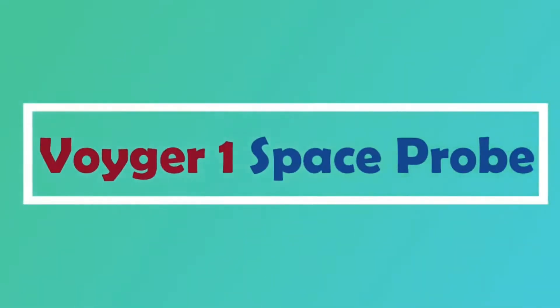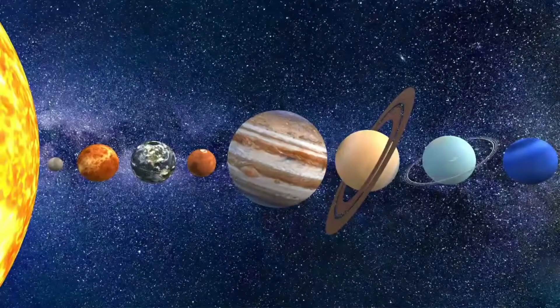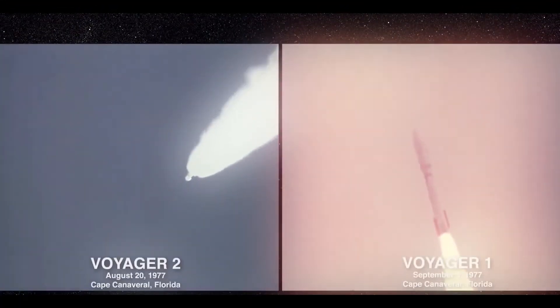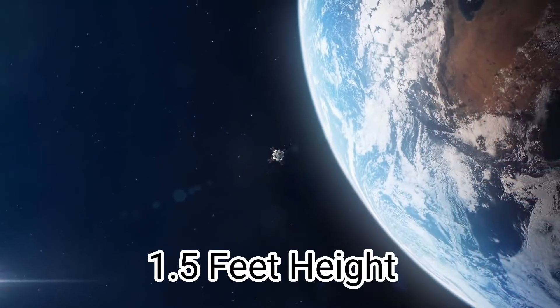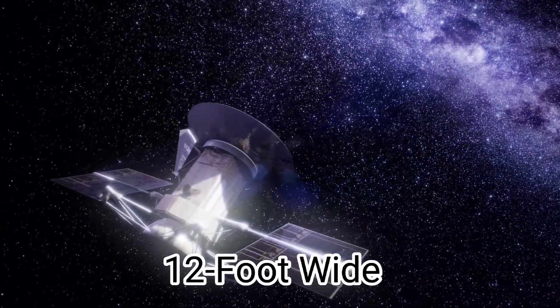They were established in 1977 to take advantage of a favorable alignment of Jupiter and Saturn. Voyager 2 was launched on August 20, 1977, and Voyager 1 was launched just two weeks later, on September 5. This probe has a height of 1.5 feet and is almost 6 feet wide. There is a round 12-foot-wide antenna on the top of it.